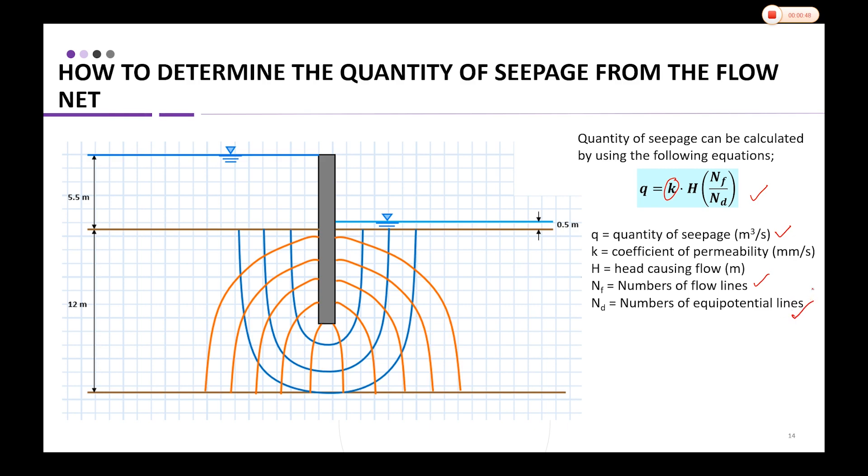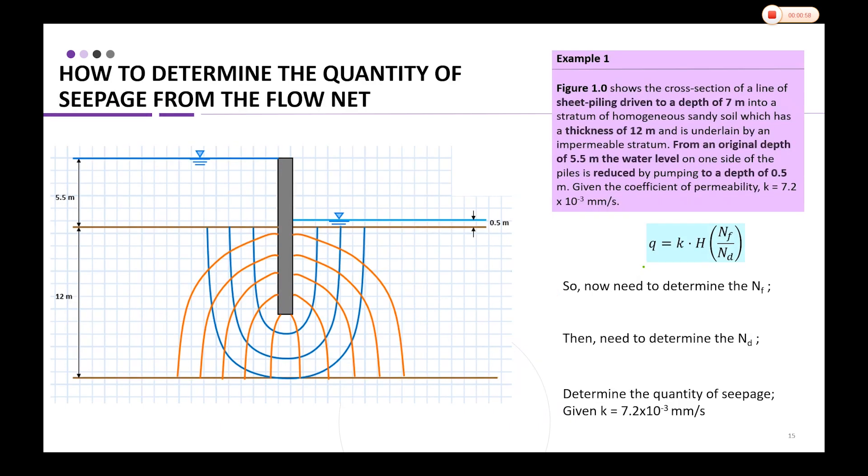The values of Nf and Nd will be determined from the flow net. Now we need to determine Nf to complete this question. K is already given as the coefficient of permeability, and h is calculated here: 5.5 meters minus 0.5 meters, which equals 5 meters.